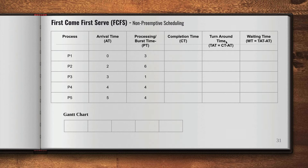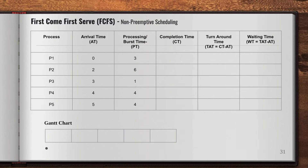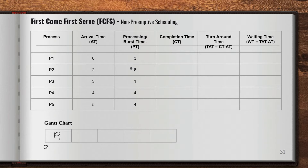To calculate those values, the first thing we do is create a Gantt chart. At time zero, P1 came into the ready queue, so we write P1 in the chart. This process will run for how long? The processing time for P1 is 3 units of time, so this process is going to execute for 3 units of time. We put 3 as the end marker.